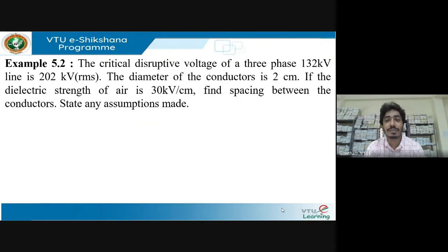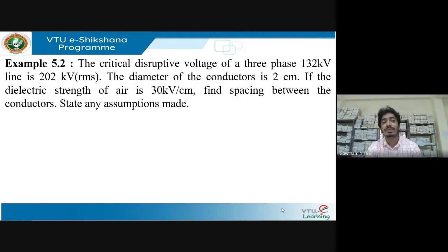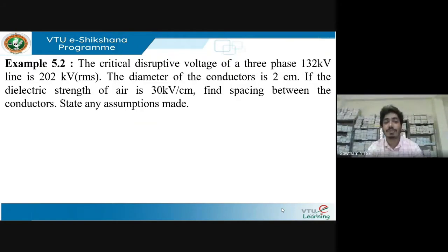The next problem requires finding the spacing between conductors. If data is missing, you assume certain conditions. The critical disruptive voltage is given as 132 kV for a 132 kV line, the critical disruptive voltage is 2/√2 kV RMS. The diameter of conductors is 2 centimeters, dielectric strength of air is 30 kV per centimeter, and you must state any assumptions made.